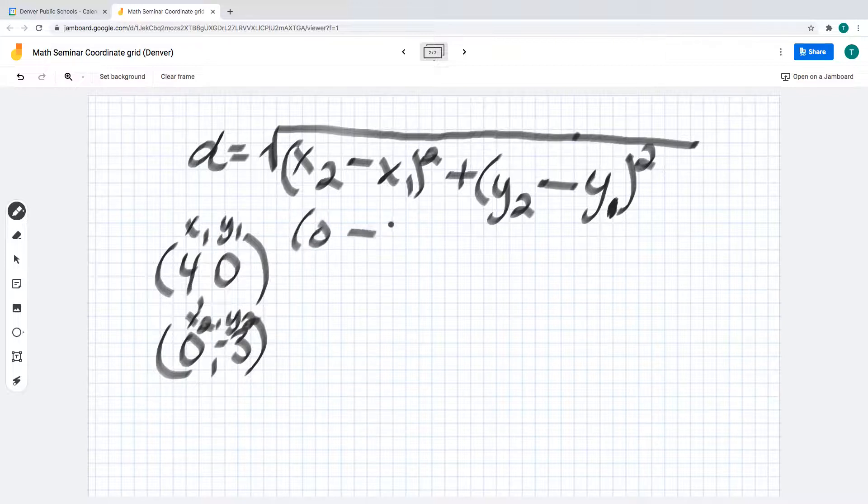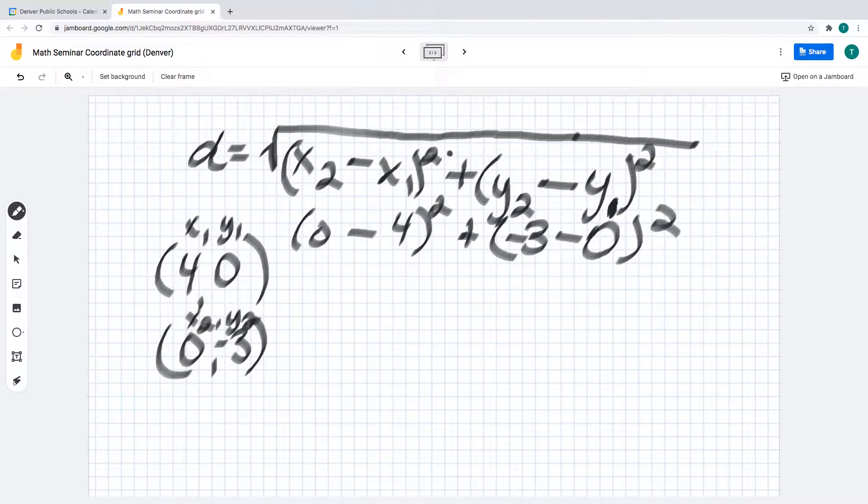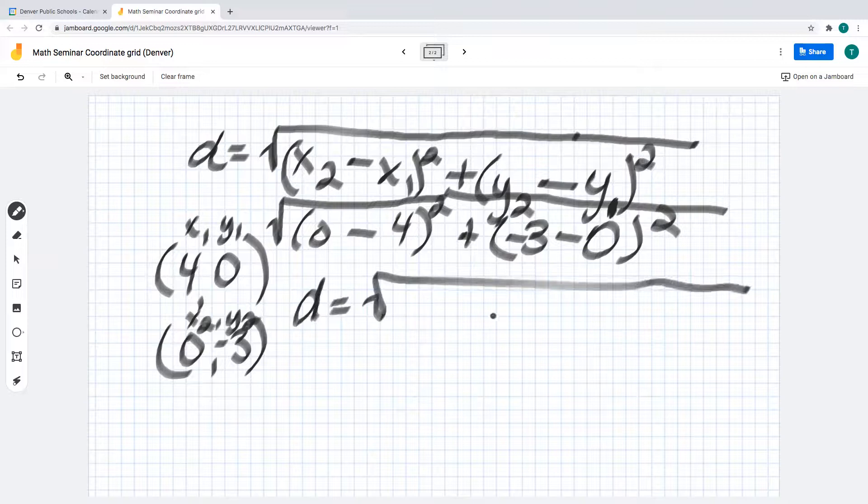So let's go ahead, let's say 0 minus 4 squared plus negative 3 minus 0 squared. A lot of people get tripped up here because they do their steps wrong. They do this out of order, okay? You can't do this out of order. You got to do what's in parentheses first and then squared.